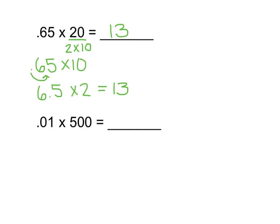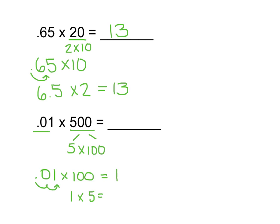Let's take a look at this second problem. We have 0.01 times 500. I know that 500 is made up of 5 times 100. I could also think of this as: if I have 500 pennies, how many dollars is that worth? I could either do times 5 first or times 100 first. Let's start with times 100 — that means moving the decimal place to the right 2 times, which brings me to 1. Now I need to do 1 times 5, which equals 5.